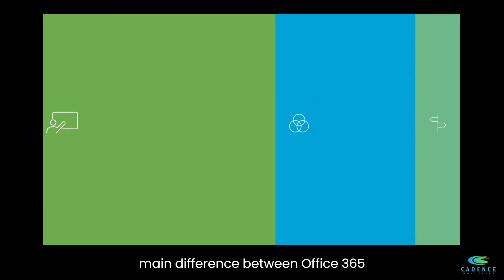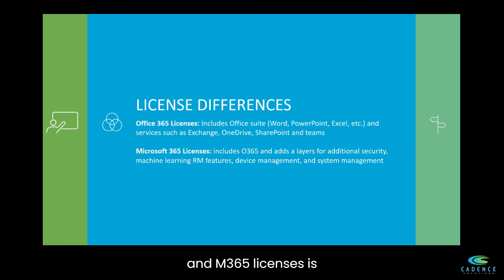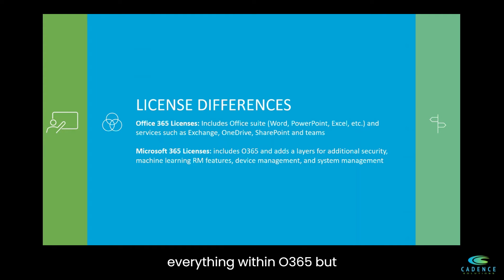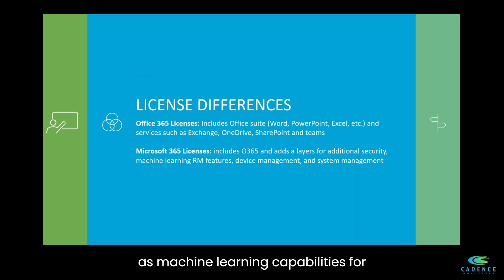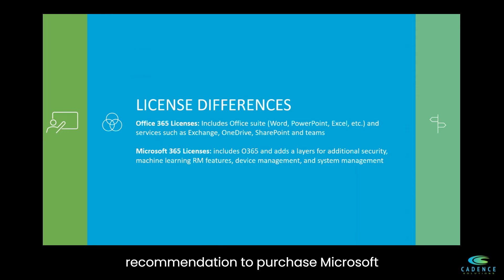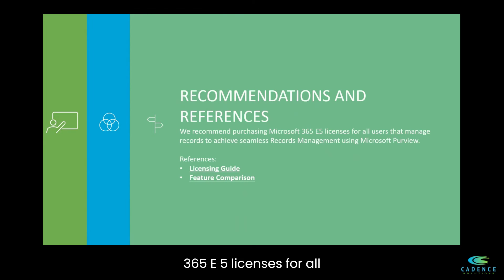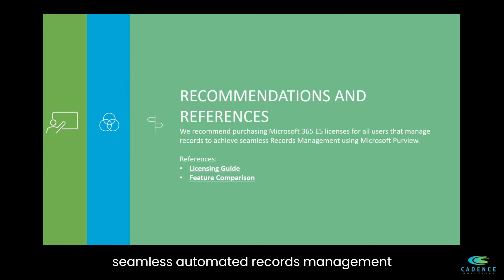The main difference between Office 365 and M365 licenses is M365 licenses includes everything within O365 but adds additional security features as well as machine learning capabilities for records management. It is therefore our recommendation to purchase Microsoft 365 E5 licenses for all users that manage records to achieve seamless automated records management using Microsoft Purview.